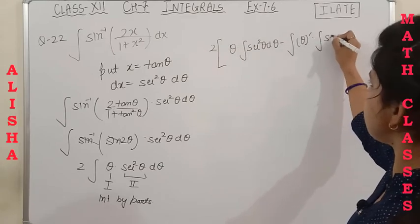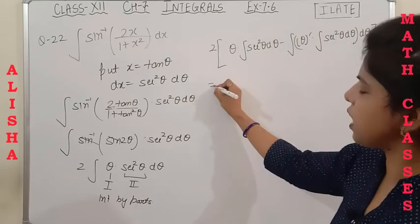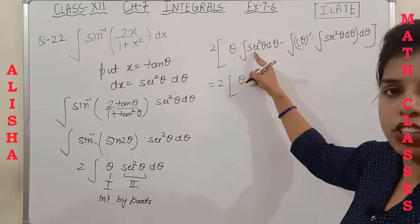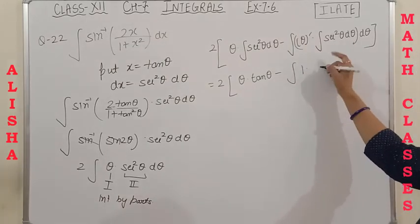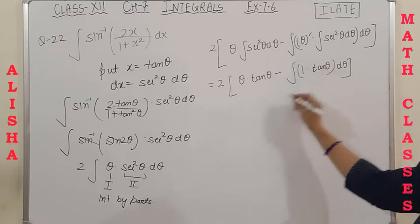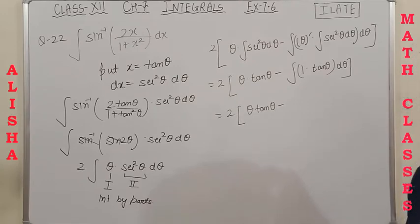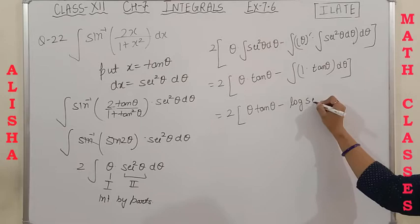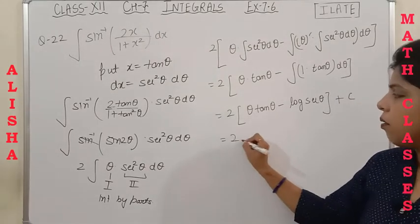Integration by parts gives: 2[θ·tanθ − ∫tanθ dθ] = 2[θ·tanθ − log|sec θ|] + C. We use log|sec θ| rather than −log|cos θ| because secθ = √(1+tan²θ), making it easy to convert back. Since tanθ = x and θ = tan⁻¹x: the result is 2[tan⁻¹x·x − log√(1+x²)] + C.